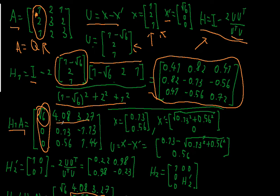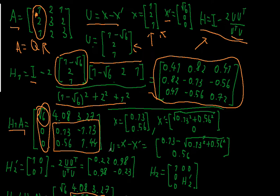Now, what you want to do is only consider this submatrix. The submatrix entries are: -1.13, 0.56, and 1.44. And for information, the other values are 4.08 and 3.27. If I only consider this submatrix, my first column vector of this submatrix is the vector [-1.13, 0.56]. This is my new vector x.